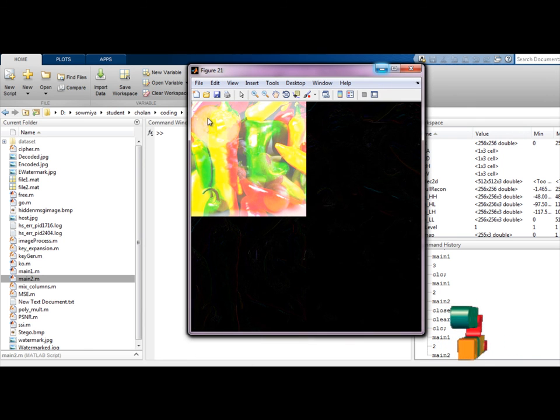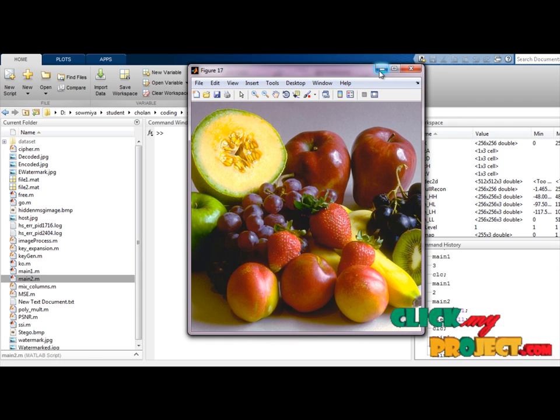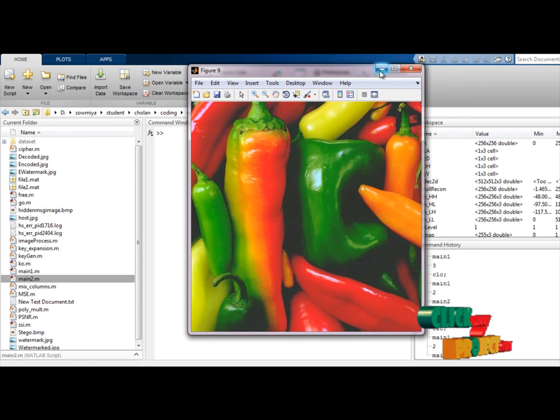The two images find out. For example, this is the hidden place and this is the cover image. Both you apply DCT. Both images you analyze. This is our final output.